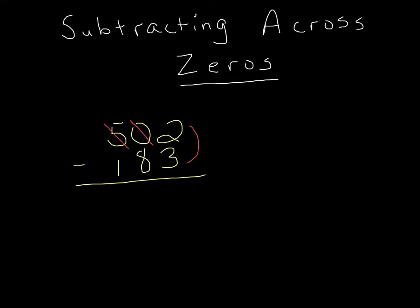Now I take one of those hundreds. When I take a hundred, I have 400 left. And I give one of my hundreds to the tens. And that becomes a ten above the zero. Now, going back to my ones place, I can now take from my tens place, which is now a ten, take one, which would now become a nine, and give one to my ones place.